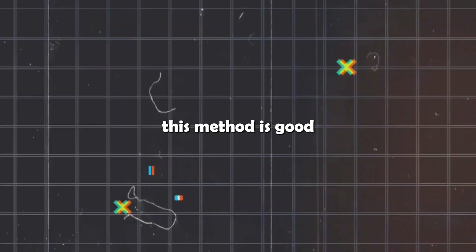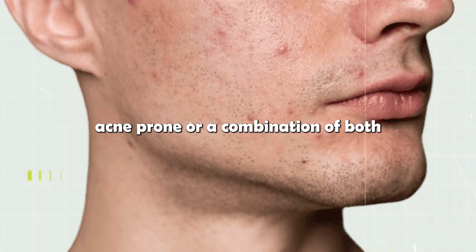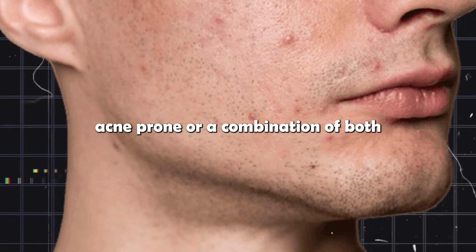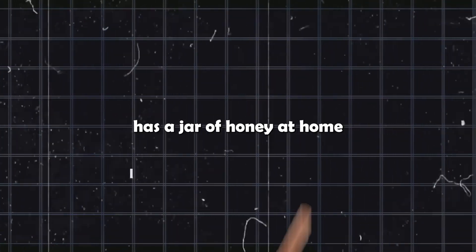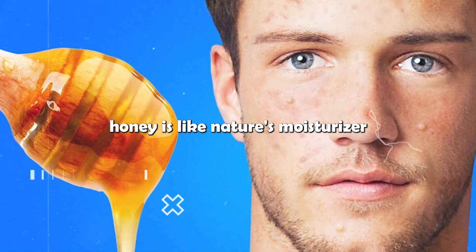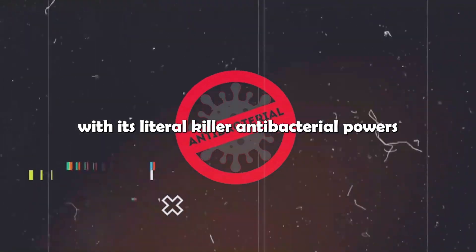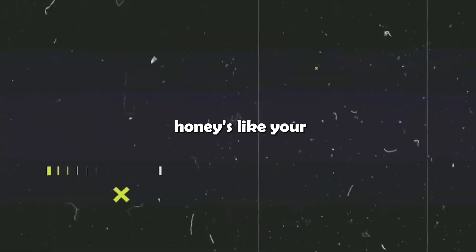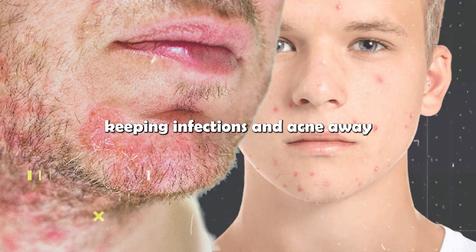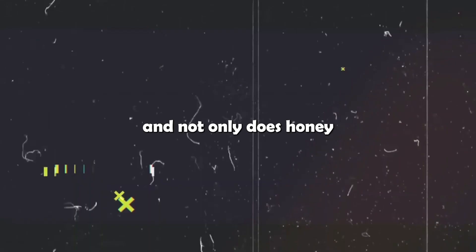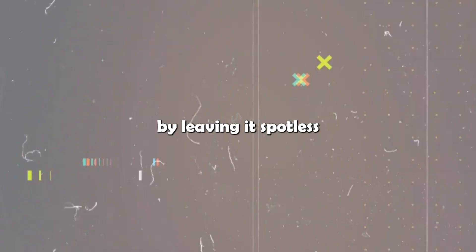Next is honey. This method is good if your skin type is oily, acne-prone, or a combination of both. And I'm pretty sure nearly everyone has a jar of honey at home. Honey is like nature's moisturizer. It keeps your skin hydrated and looking good. With its literal killer antibacterial powers, honey is like your personal face bodyguard, keeping infections and acne away.